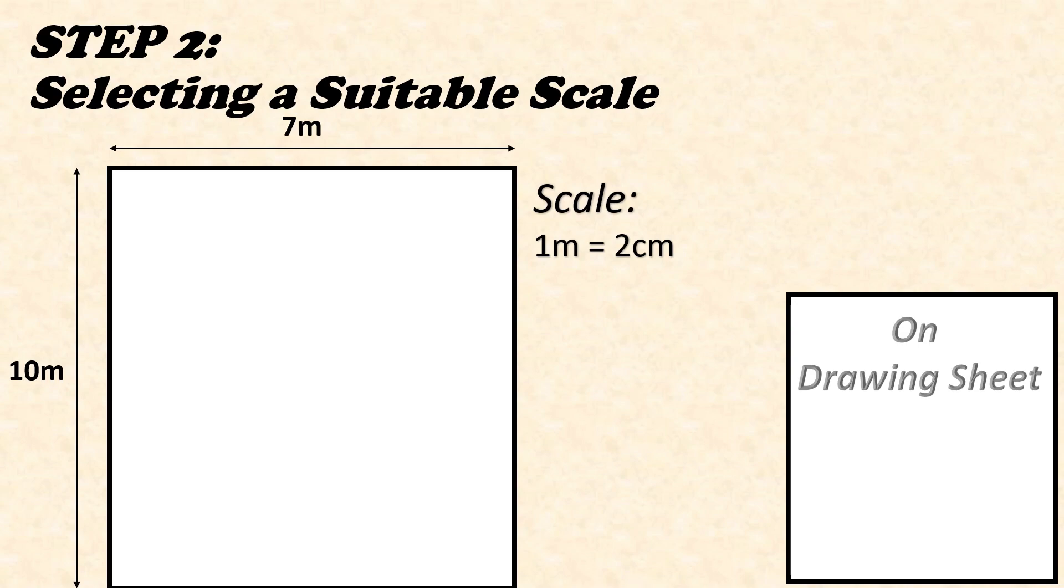Then we will select 1 meter equals 1.5 centimeter scale. This time we'll have to draw a vertical line of 10 meters, that is 15 centimeters, and a horizontal line 7 meters, that is 11.5 centimeters. Or if in our first preferred scale 1 meter equals 2 centimeters, if the drawing on our sheet is too small compared to the drawing sheet size, then we'll have to select a scale 1 meter equals 2.5 centimeters.